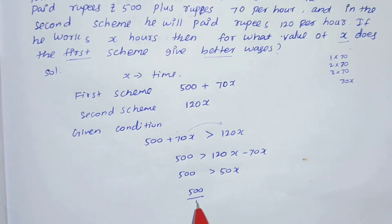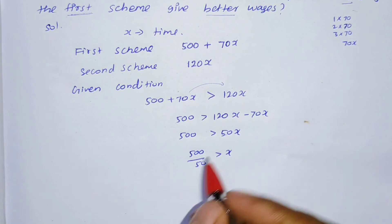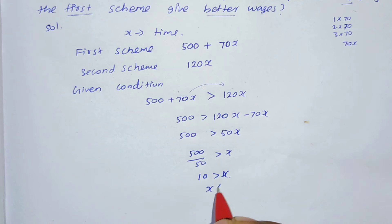50 is opposite, 500 divided by 50 greater than x. Now cancel, 10 times. 10 greater than x, or x less than 10.